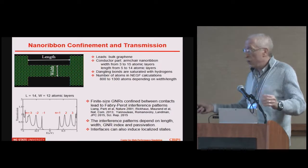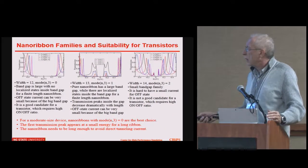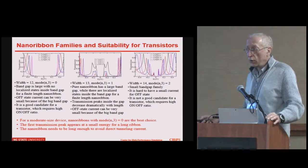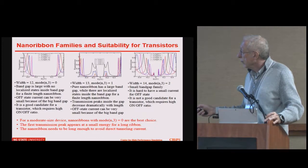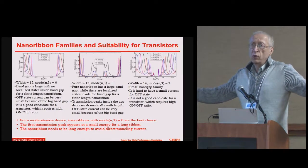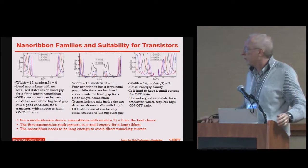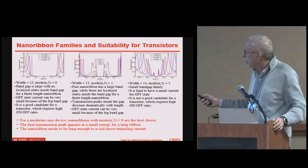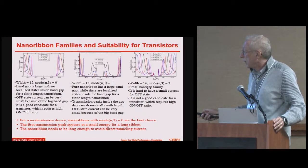We tried many ribbons, many widths, and many lengths. Nanoribbons can be characterized by their width modulo 3. When width mod 3 is 0, we have a reasonable gap and things behave fine. When it's mod 1, we have an even larger gap but there are extra localized states that disappear as we make the nanoribbon longer — though you don't want a very long device if you want highly packed devices. When mod 3 is 2, we have a very narrow gap, which is not so good.